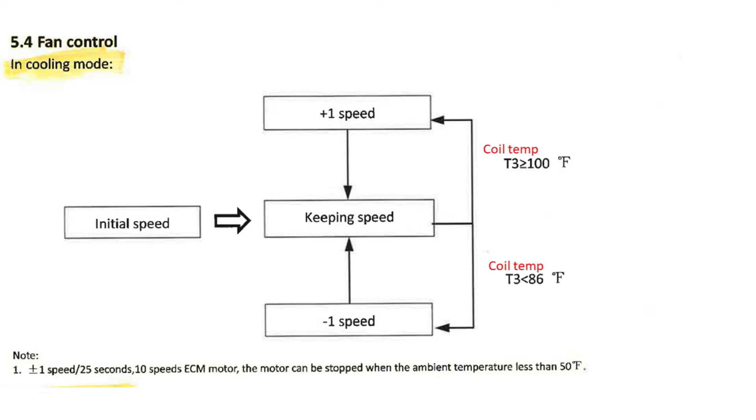Your expectations of the condenser fan motor in cooling mode should be it's operating off of the temperature of the condensing coil. Here's an example. You'll hold the speed until the coil gets above 100 and then you'll increase one speed. Coil gets below 86, you'll decrease one speed. It'll keep changing speeds of the 10-speed ESCM motor until it matches the actual temperature it's looking for.